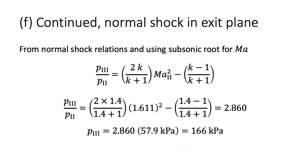Finally, for case 3, to calculate the pressure with the normal shock in the exit plane, we use the normal shock relation for the pressure drop across the shock. The pressure and Mach number before the shock correspond to the conditions for case 2. Plugging in these values, we get a pressure of 166 kilopascals.